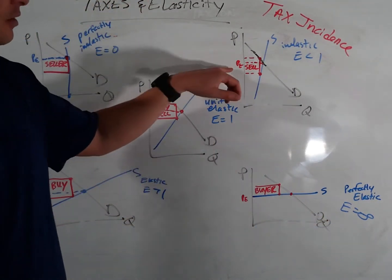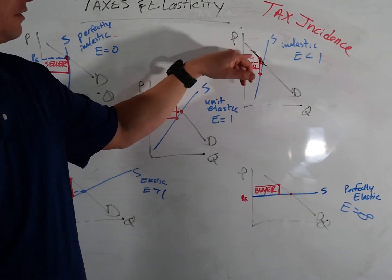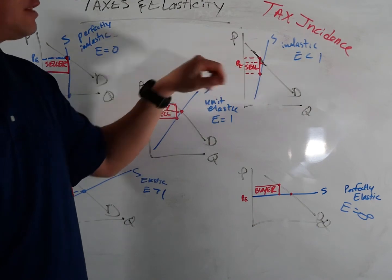Well, if they get taxed more, they're going to pay more of the tax incidence because you see this part of it, there's a big square here. This part of it's bigger than that part of it. That means that the seller is paying more.